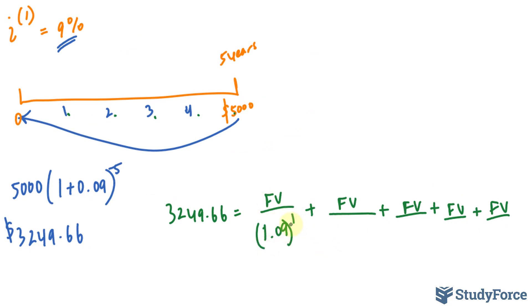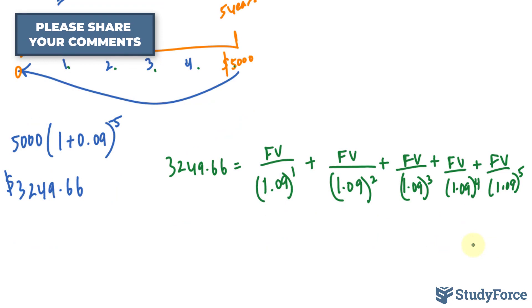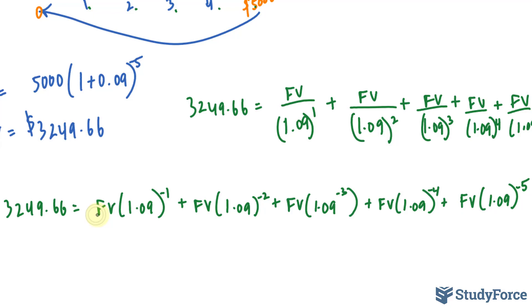The only thing that changes is the denominator. So we have 1.09 to the power of 1, 1.09 to the power of 2, 1.09 to the power of 3, and you get the idea. You can write these down as negative exponents to make the solving process easier. Now we'll factor out FV from each of these.